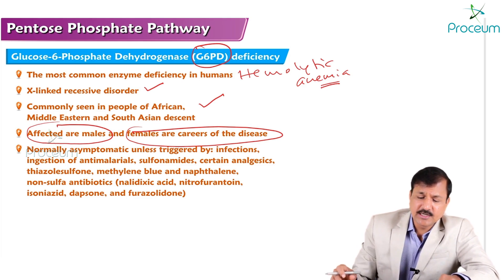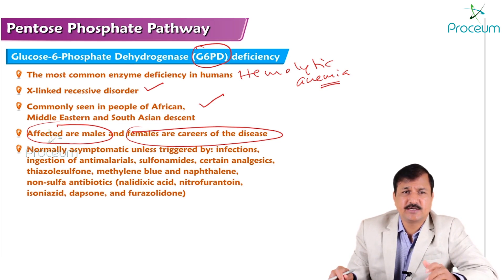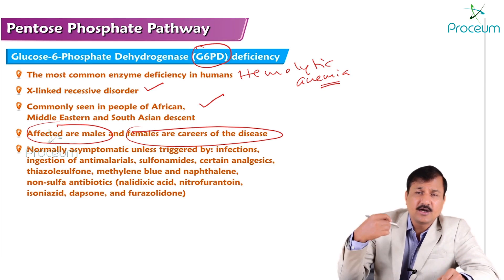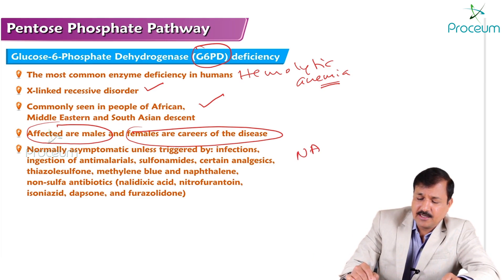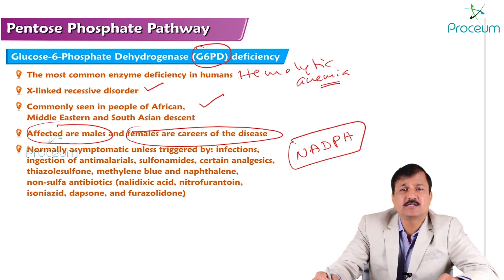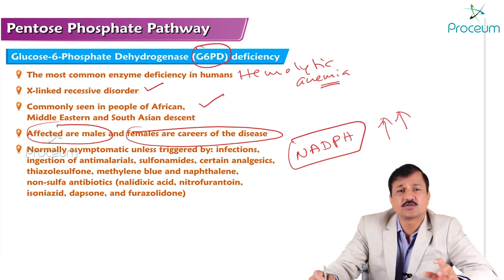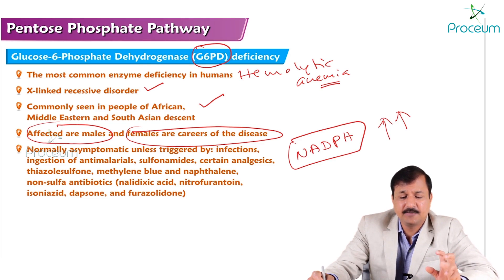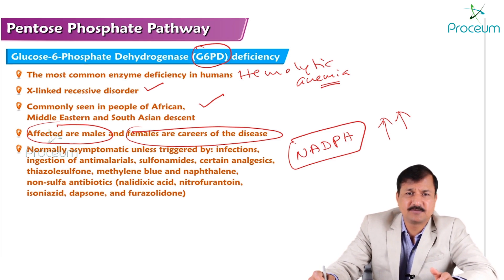Note that it is a G6PD deficiency, not a complete absence of G6PD. That means some amount of glucose-6-phosphate dehydrogenase enzyme is still present in these patients, which will conduct the oxidative phase of the pentose phosphate pathway and produce the necessary NADPH to maintain basal metabolic needs of the cell. These patients are usually asymptomatic.